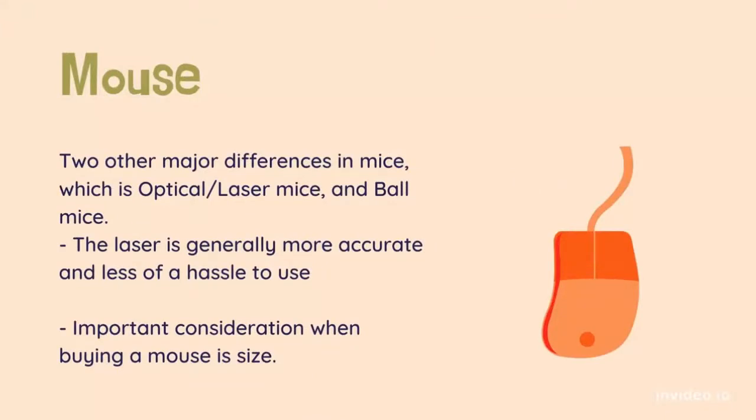There are two other major differences in mice, which is optical, laser mice, and ball mice. This is how the mouse tells where it is, with the laser measuring the distance it crosses when it is moved, and the ball measuring how it rotates. The laser is generally more accurate and less of a hassle to use, and can be used on more surfaces, but the ball mouse is cheaper. Ball mice are rarely seen today.